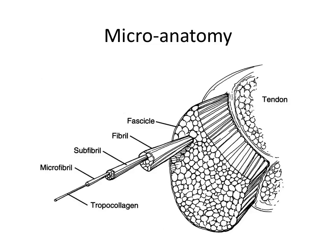The microanatomy of the tendon consists of fascicles, and each of these fascicles goes down to the level of a tropocollagen, which is a linear structure of collagen material secreted by the tenocytes within the tendon. These then go on to form microfibrils, subfibrils, fibrils, and fascicles, which eventually result in the composite structure of the tendon.